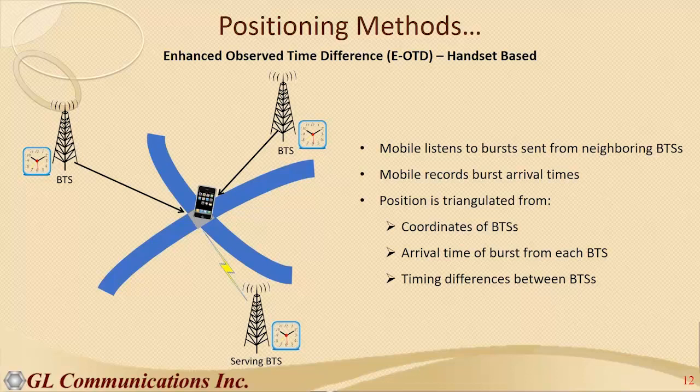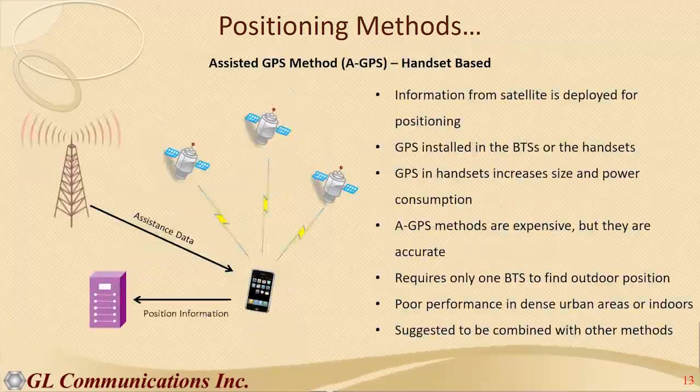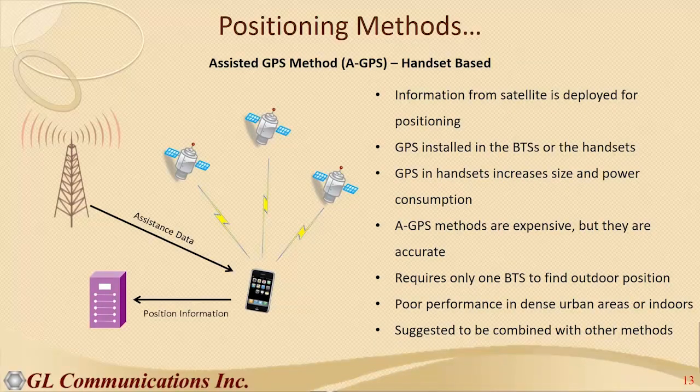The Enhanced Observed Time Difference (E-OTD) method is a handset-based method — the opposite direction from network-based methods. The BTS sends out a burst, and the mobile listens to those bursts, records the time of arrivals, calculates its location information, and then communicates that back to the mobile network.